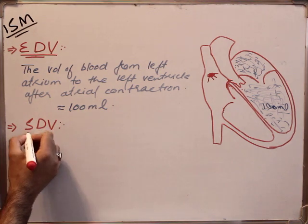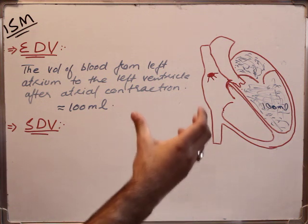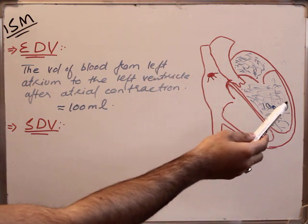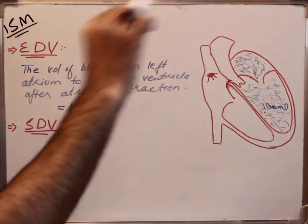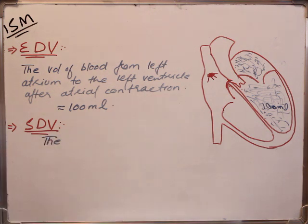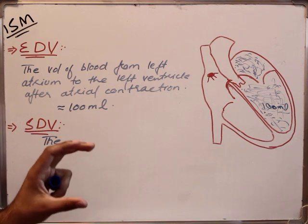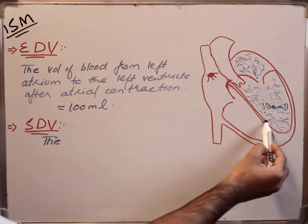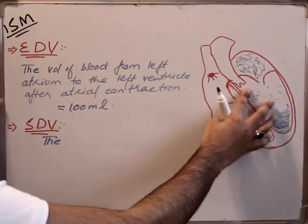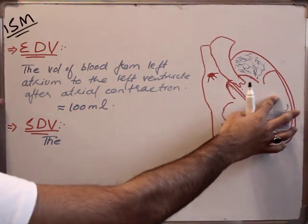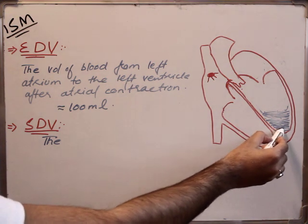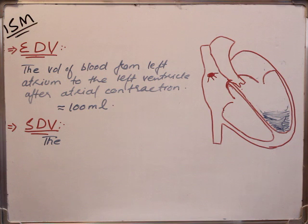When blood reaches the ventricle, the ventricle performs the action of contraction. When the ventricle contracts under the stimulus, it ejects the blood to the aorta and distributes it into the body. The amount of blood ejected from the ventricle to the aorta leaves the ventricle, while a small amount of blood remains in the ventricle — it will not leave the ventricle.